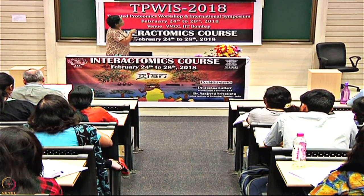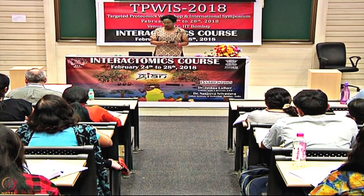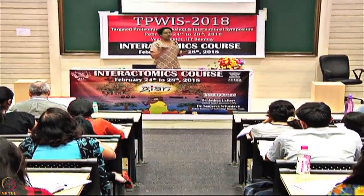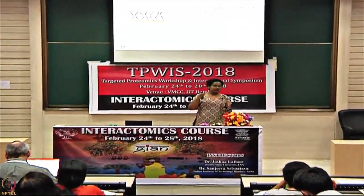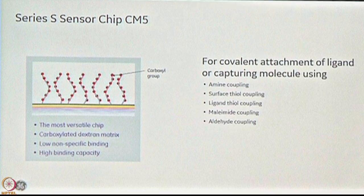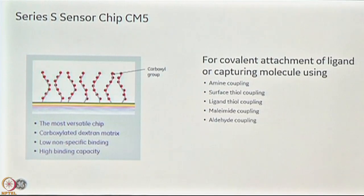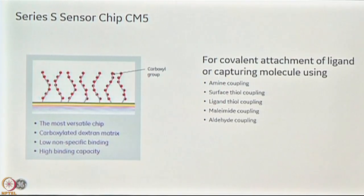There is also the CM7 chip, typically used for small molecules. The basic structure of all chips has a glass surface with a gold coating, then a linker molecule where dextran molecules are attached, and the dextran molecules have carboxymethyl groups where covalent linking happens. The CM5 chip is the most versatile — when doing a first experiment on Biacore with a new system, it's the first choice. It works for most proteins and supports almost all kinds of covalent chemistry.